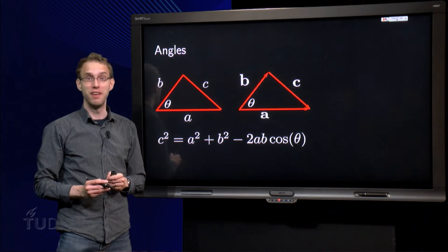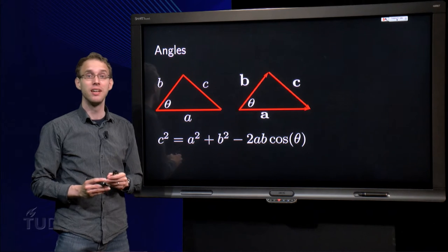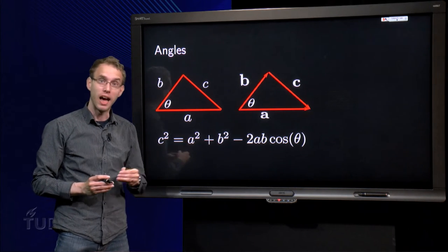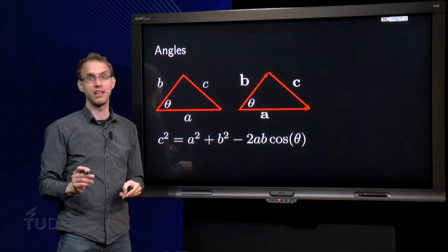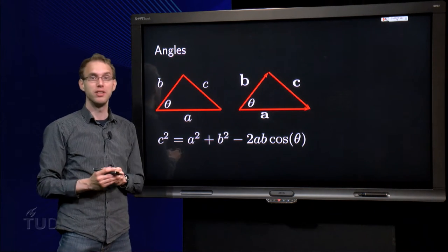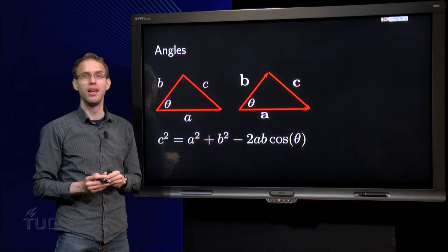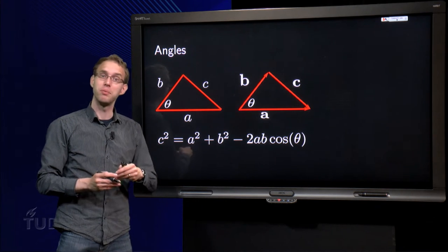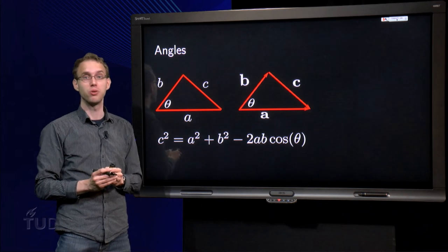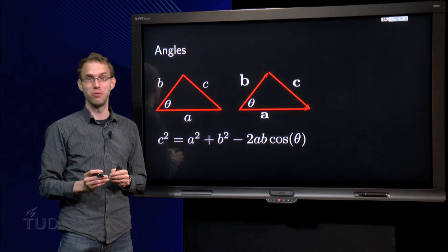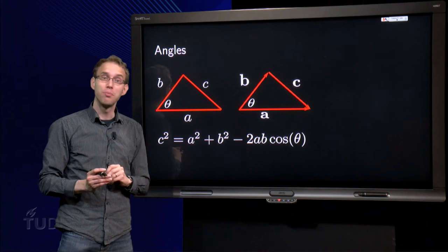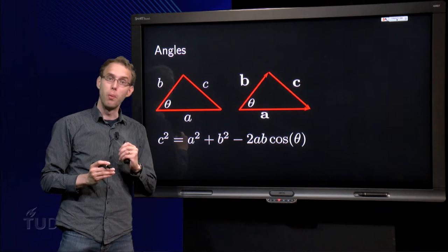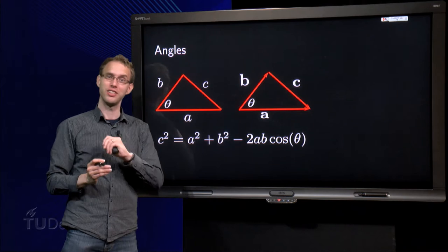The inner product of a vector with itself gives us the length of the vector squared. But what happens if we take the inner product with two different vectors? Does that have a geometric interpretation too? In this video we will learn that it does. We can use the inner product between two different vectors to compute the angle between those two vectors. Moreover, the inner product gives us a really easy criterion to determine whether two vectors are orthogonal or not.